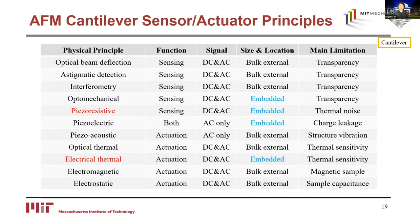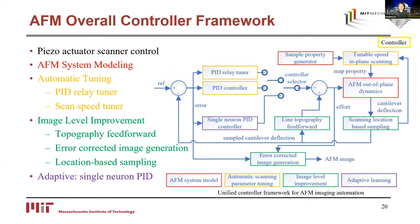Now let's take a look at the general framework of our controller, the third key aspect we'll be focusing on today. This slide shows an overall framework of the color-coded AFM control system with automation and additional algorithms developed in this work. The fundamental-level control is the piezo-actuator scanner. The overall AFM dynamics are relatively complicated, but we can approximately model the AFM system and sample dynamics. Based on this model, we developed algorithms for automated PID relay-based tuning and in-plane scan speed tuning, as well as three image-level improvement algorithms: topography feed-forward, error-corrected image generation, and location-based sampling for increased-speed scanning. An adaptive single-neuron PID controller was also developed for cases with significant sample material property variation.